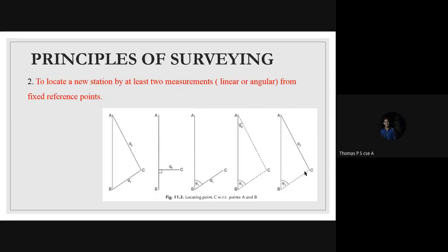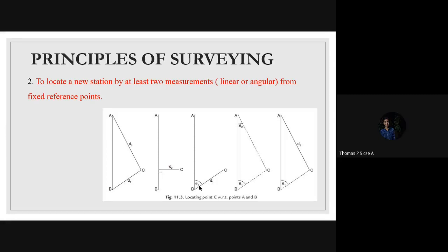Thomas confirms understanding of the working from whole to part principle. For the second principle, he says: locating a point with respect to another two points, using linear or angular methods. The instructor confirms at least two measurements must be taken. For example, to find how far a tree is from a wall of a building — with points A and B at the ends of the wall — we take two measurements D1 and D2, or find the orthogonal point, to locate the tree.